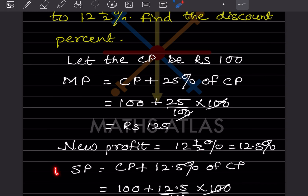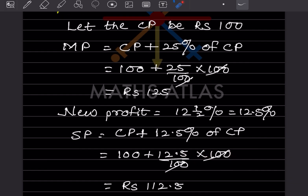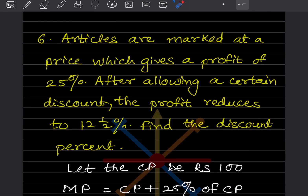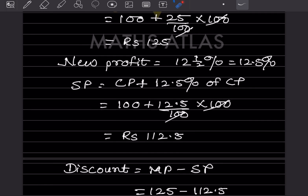The selling price will be cost price plus 12.5 percent of cost price. Cost price is 100, and 12.5 percent of 100 is 12.5. So selling price is 100 plus 12.5, which equals rupees 112.5. Now we need to find the discount percentage.